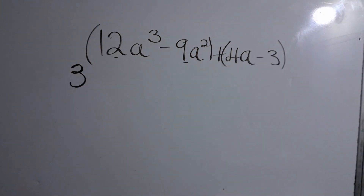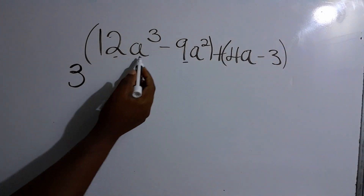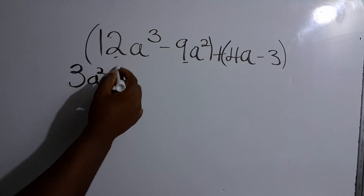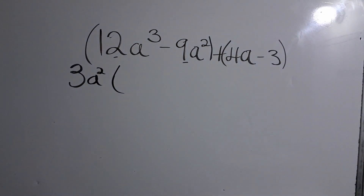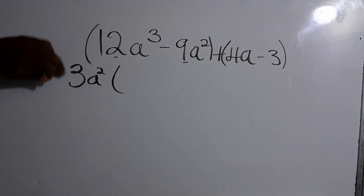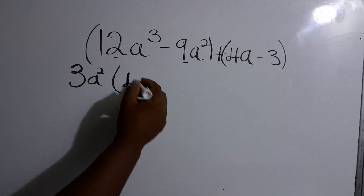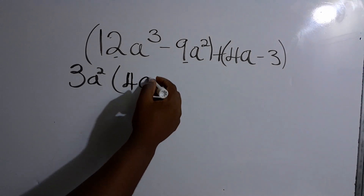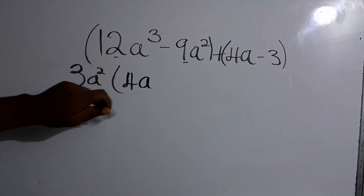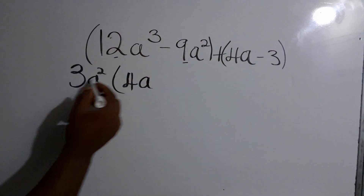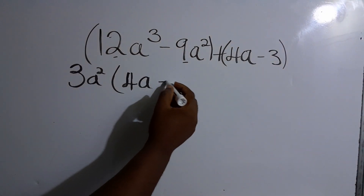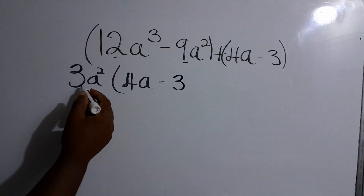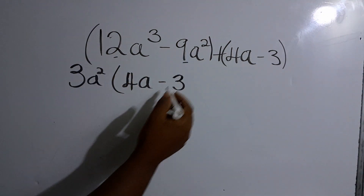We take out 3 because 3 is common. We also have a² and a³, so a² is common. We take out 3a², open the bracket, and divide: 3 into 12 is 4, a³ divided by a² leaves a, giving 4a. Then 3 into 9 is 3, and a² cancels, giving minus 3. So the first group is 3a²(4a - 3).